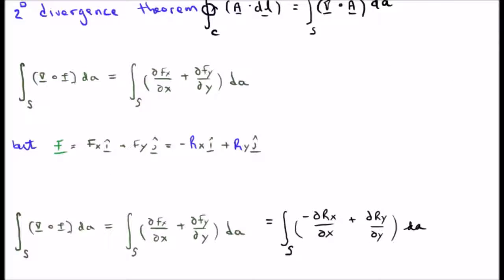Putting it all together, if we plug in this vector field F into the two-dimensional divergence theorem and relate it back to R, we get the surface integral of minus del r sub x del x plus del r sub y del y, which is written at the bottom of your screen.